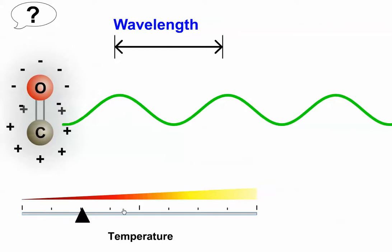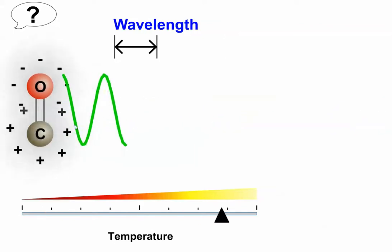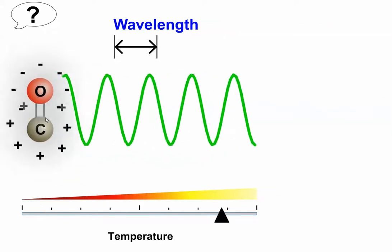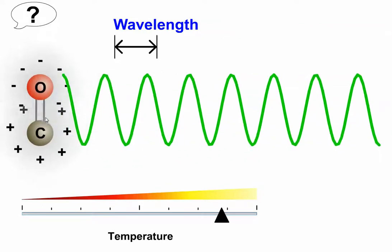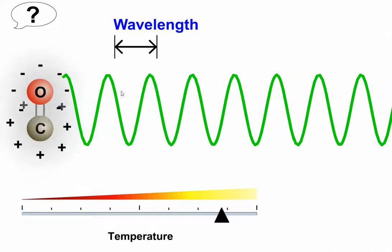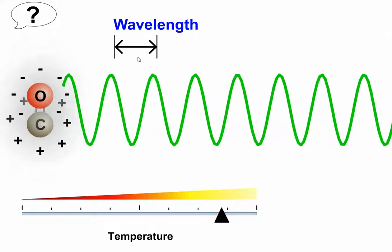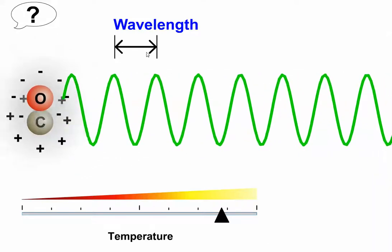But when temperature increases, the oscillations get faster, which makes for a higher oscillation frequency. This high frequency means that the emitted electromagnetic radiation has a relatively short wavelength.